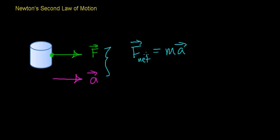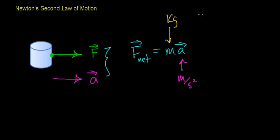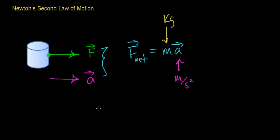Newton's second law is a vector equation — you must take into account both the direction and the magnitude of the force. Acceleration is measured in meters per second squared, and mass is measured in kilograms. Mass is a measurement of an object's resistance to a change in its state of motion — another way to say that is mass is a measurement of an object's inertia. Inertia is an intrinsic property of matter, so all things with mass resist a change in velocity.